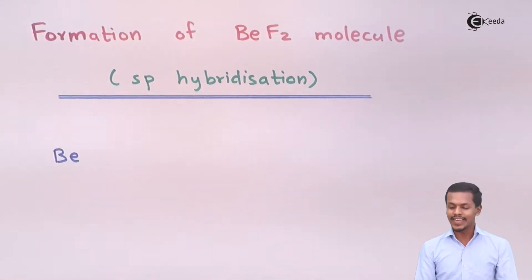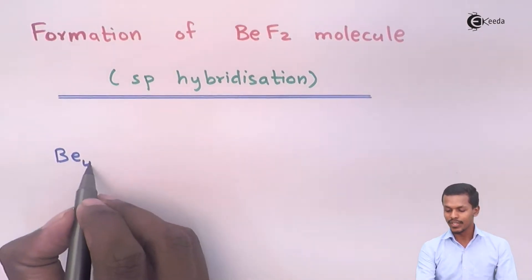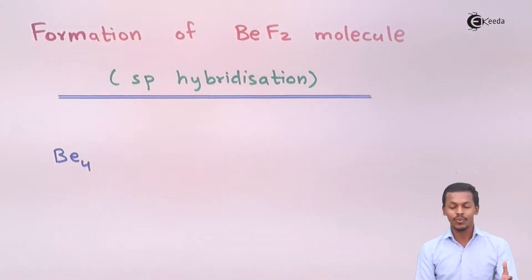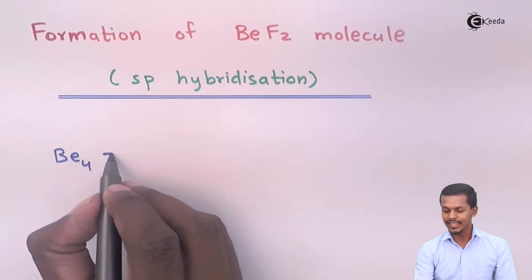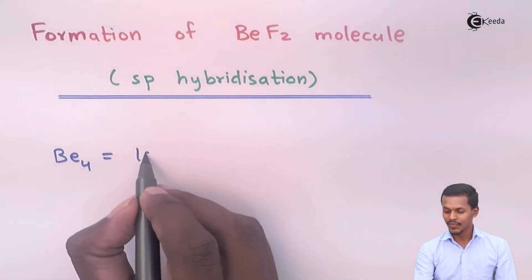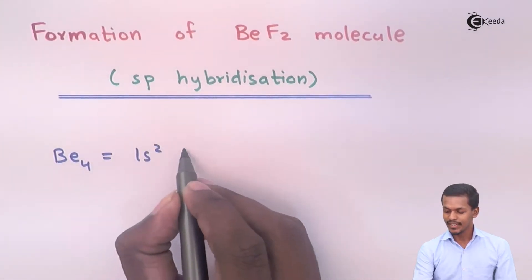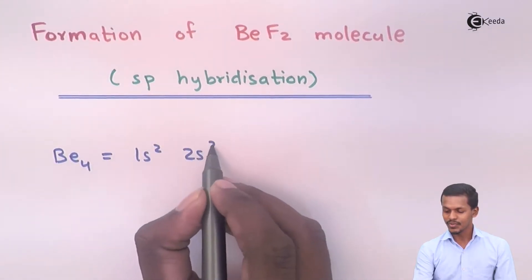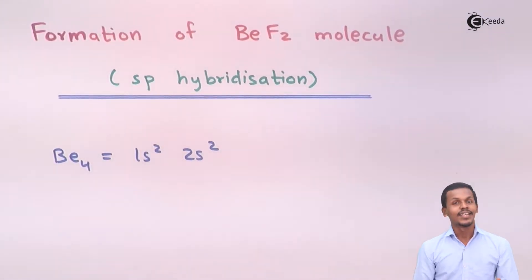Beryllium is the element which has an atomic number of 4. So the electronic configuration can be written as 1s2 and 2s2.